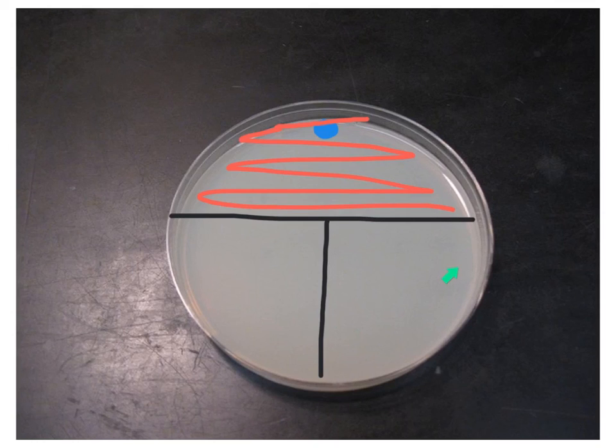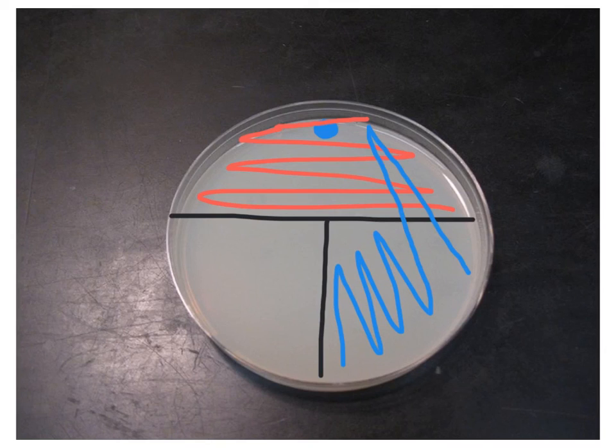I can touch this area right here and make sure there's no sizzling. If I hear a sizzling, I know that it's still hot and I need to let it cool a little bit more. I touch right here, bring it across one time, and then back and forth several times here. Then I place my lid back on my petri dish.